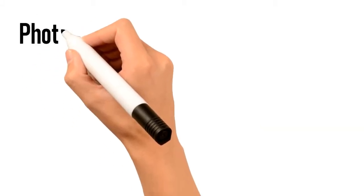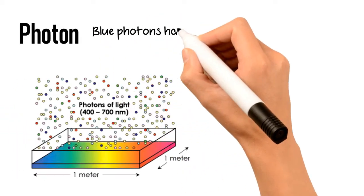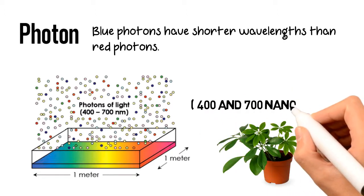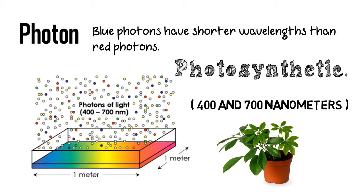The second P stands for photon. A photon is the term used to describe the particle of light. Light particles move in different wavelengths. Blue photons have shorter wavelengths than red photons. Plants have pigments and proteins that absorb photons between 400 and 700 nanometers in wavelength. Photons within this range are considered photosynthetic.